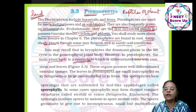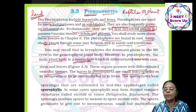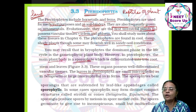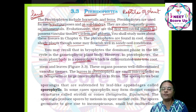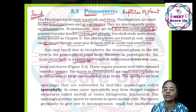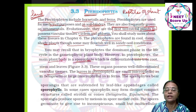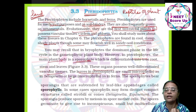These organs possess well-differentiated vascular tissue. Leaves in pteridophytes are small. There are two types of leaves: microphylls, which are small leaves, and macrophylls, which are large leaves found in ferns. In Selaginella, microphylls are present.